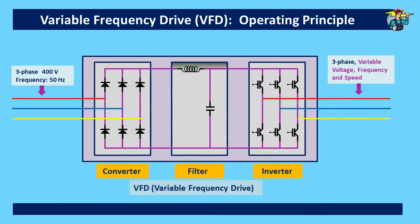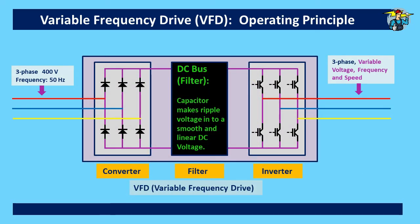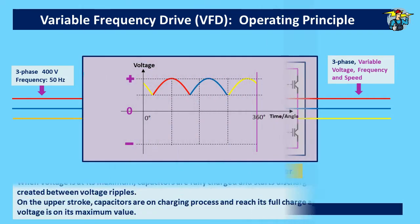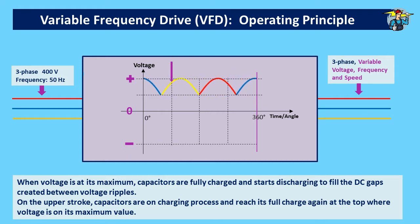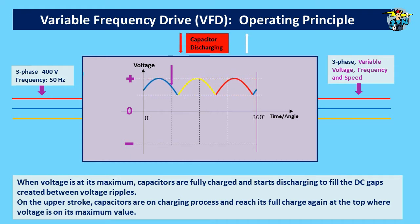The DC bus or filter is equipped with capacitors, and these make the rough and rippled voltage from the rectifier recede into a smooth and linear DC voltage. When voltage is at its maximum, capacitors are fully charged and start discharging to fill the DC gaps created between voltage ripples.